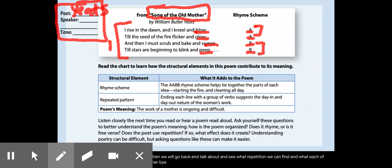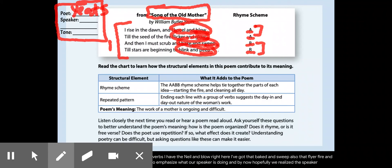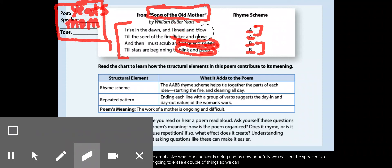From Song of the Old Mother by William Butler Yeats. I rise in the dawn, and I kneel and blow till the seed of the fire flicker and glow, and then I must scrub and bake and sweep till stars are beginning to blink and peep. Okay, so, I do notice that right here, I've got some verbs, I have the kneel and blow, right here, I've got that bake and sweep, also that fire and glow and the blink and peep. So, those verbs are there to emphasize what our speaker is doing, and by now, hopefully, we realize the speaker is a mom. Simply, as simply put, it's just a mom.